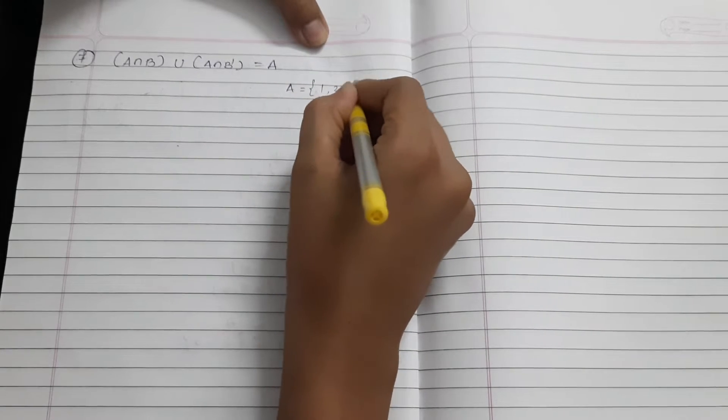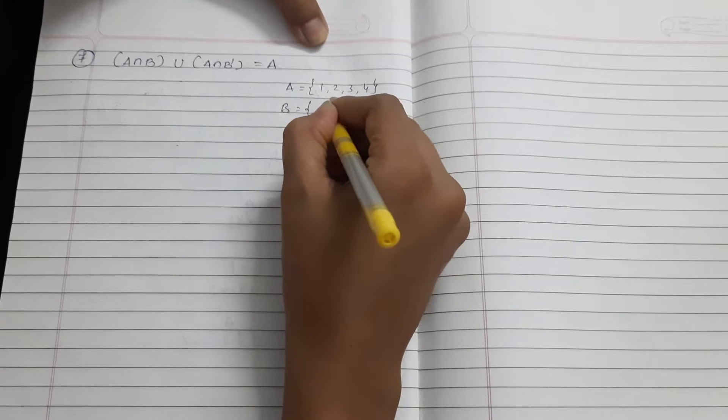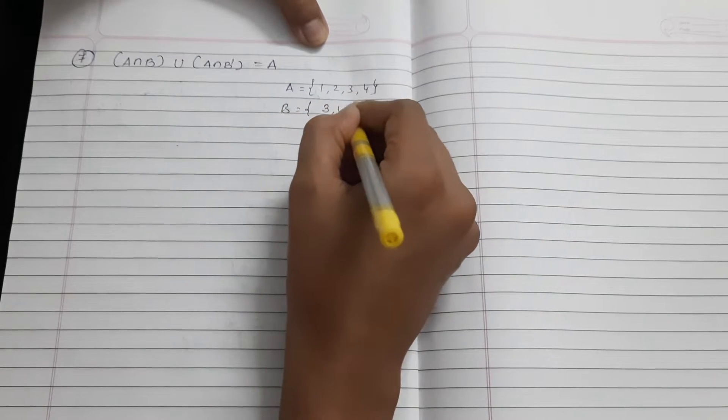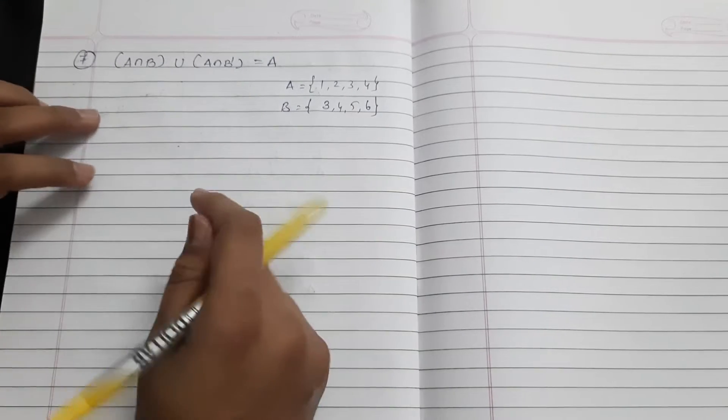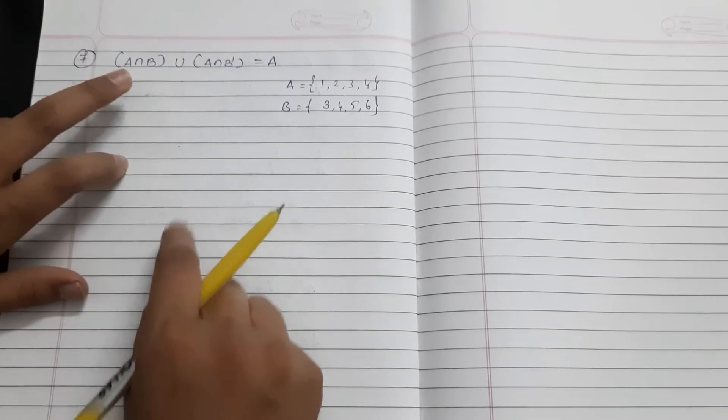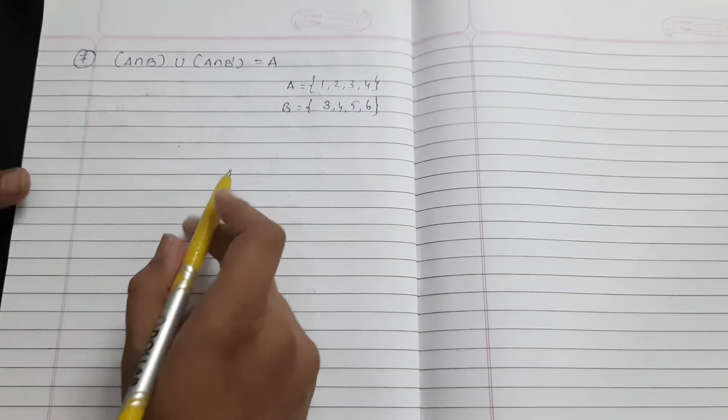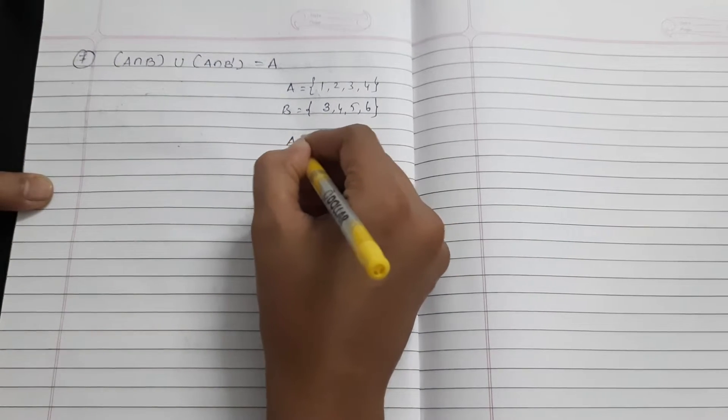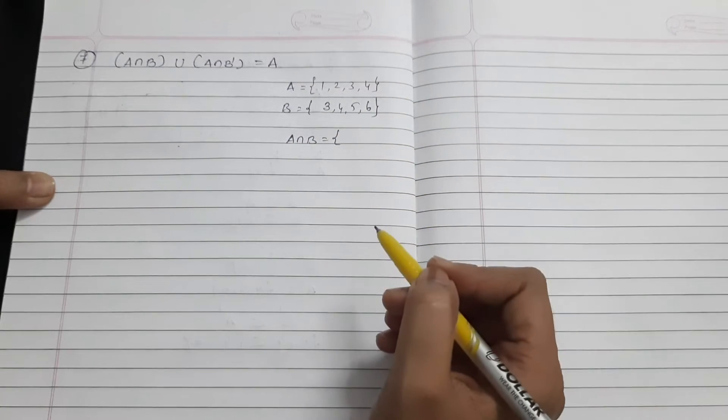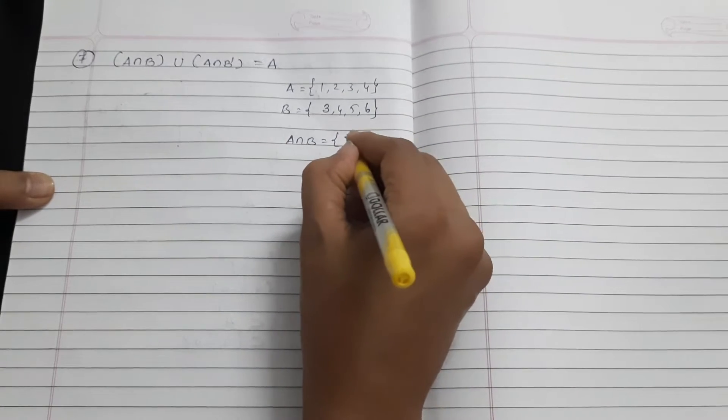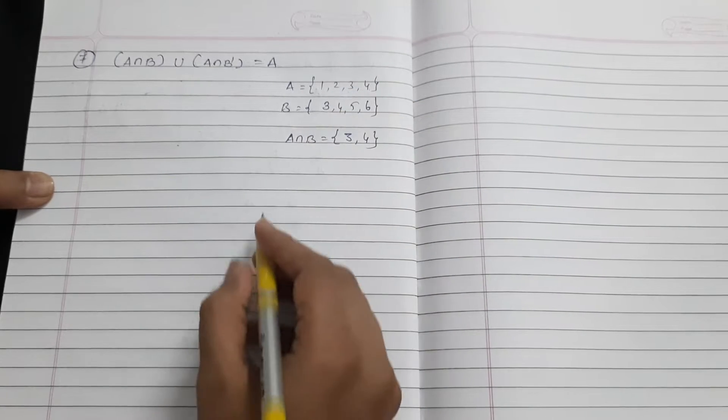Say A is {1, 2, 3, 4} and B set is {3, 4, 5, 6}. We take both sets. But first of all we process individually. So we calculate A intersection B. Both A and B have common elements, that is 3, 4.